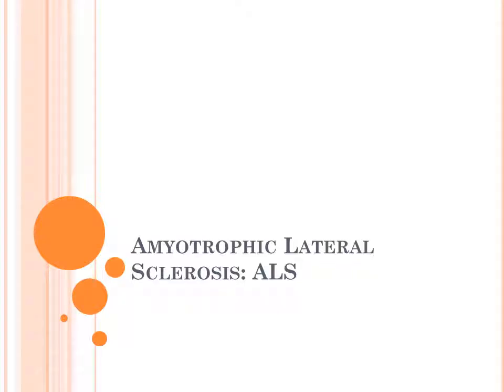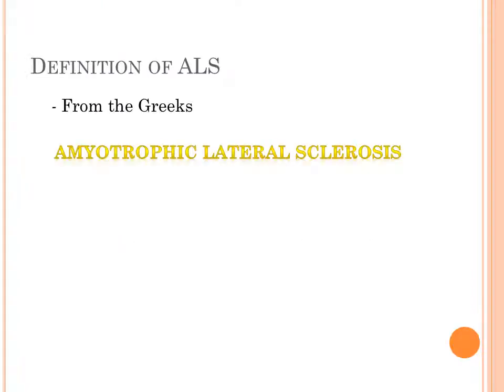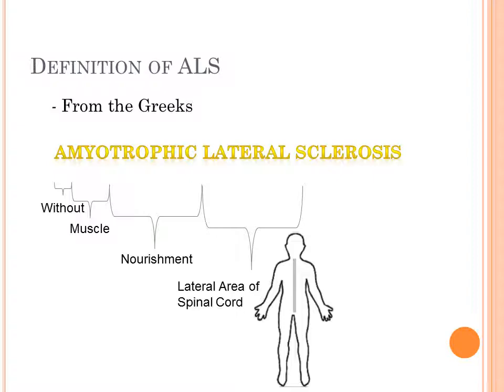Welcome to yet another lecture. Our topic today is amyotrophic lateral sclerosis, otherwise known as ALS. Breaking down the Greek word: 'a' for without, 'myo' for muscle, 'tropic' for nourishment, 'lateral' referring to the lateral area of the spinal cord, and 'sclerosis' meaning a hardening of the motor neurons.